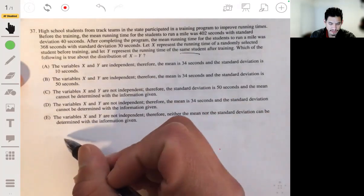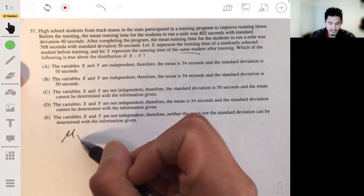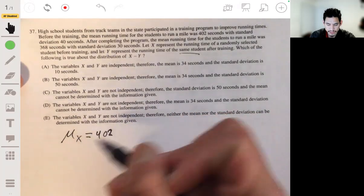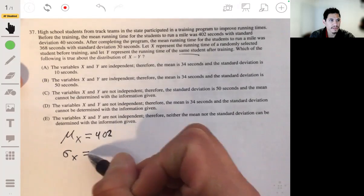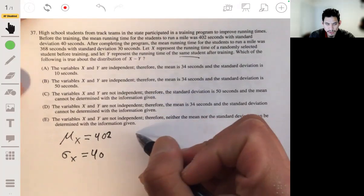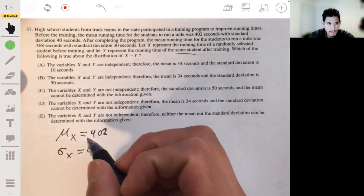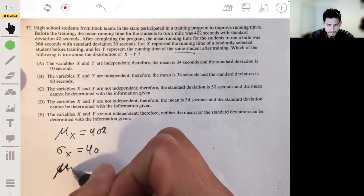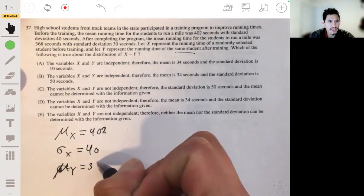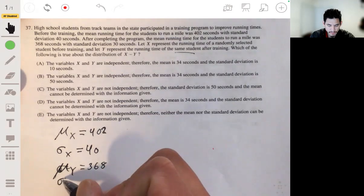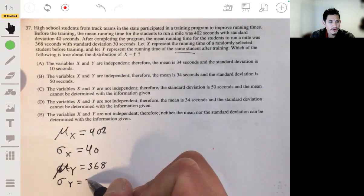Okay, so let's first write some statistics out. The mean of x can be 402, standard deviation of x we're told is 40, and the mean of y is 368, and the standard deviation of y is 30.